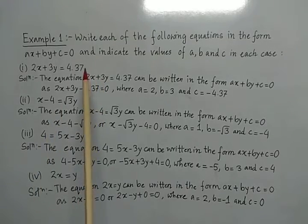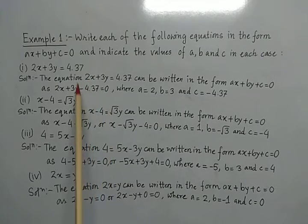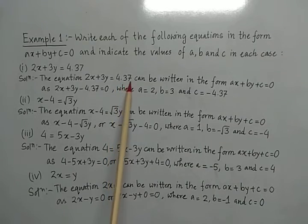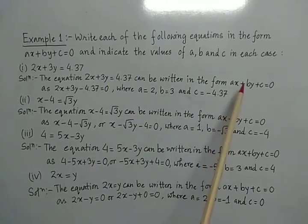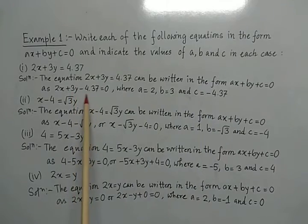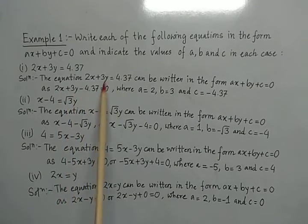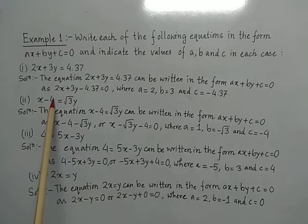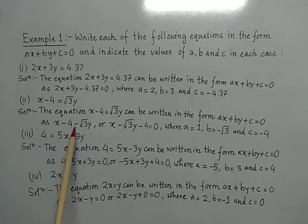The question says: write each of the following equations in the form ax plus by plus c equals to 0, and indicate the values of a, b, and c in each case. For the first equation, it is not in the required form, so we transpose one term to the left hand side. We can then write it with a equals to 2, b equals to 3, and c equals to minus 4.37. Similarly in the second equation, the y term is on the right hand side — we bring it to the left hand side to write it in the required form.